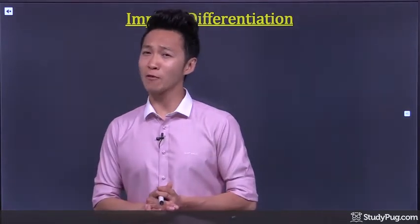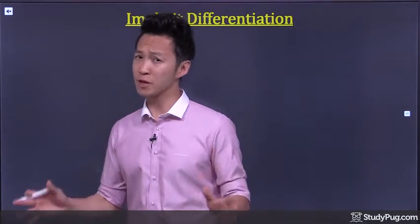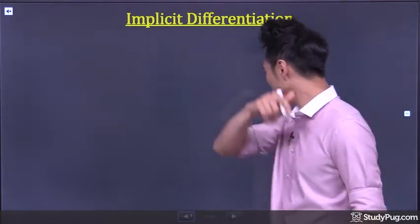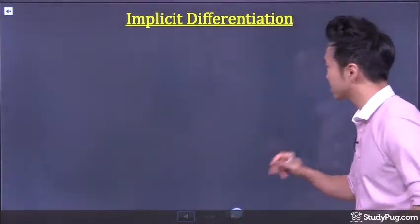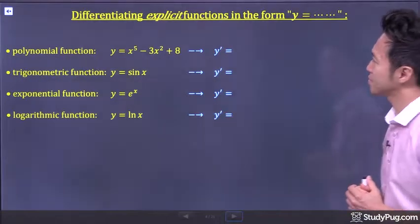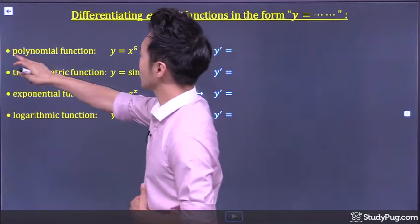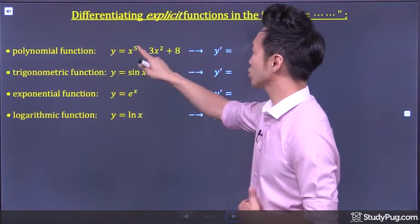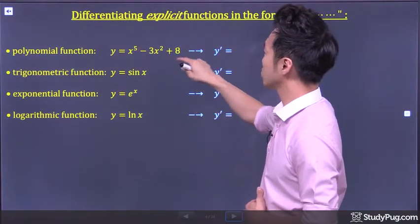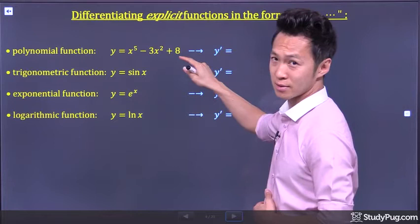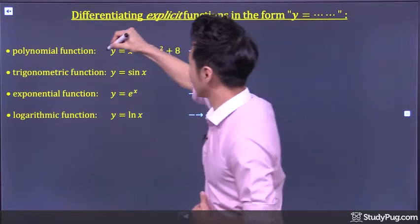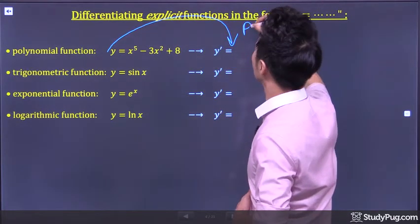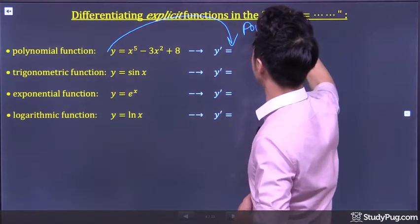By now, we've covered a lot of questions on finding the derivatives for various types of functions. Let's do a quick recap. Differentiating a polynomial function: y is equal to x to the power of 5 minus 3x squared plus 8. Well, we'll simply apply the power rule.